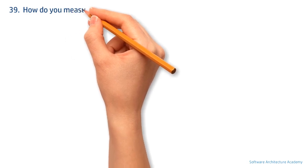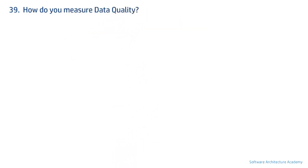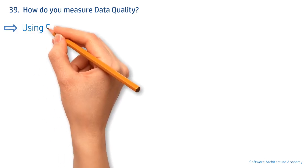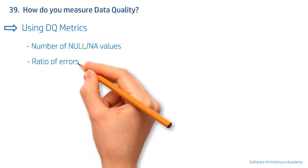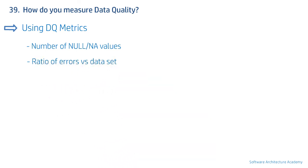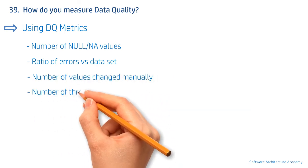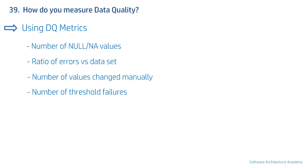The final data quality question is: how do you measure data quality? The answer involves data quality metrics, but the interviewer wants to know if you can identify the parameters that make up a metric. A few parameters could be: number of nulls received, ratio of errors against total records expressed as a percentage, number of values that needed to be fixed or updated manually, number of threshold failures like values exceeding certain bounds, and daily variance in load times.